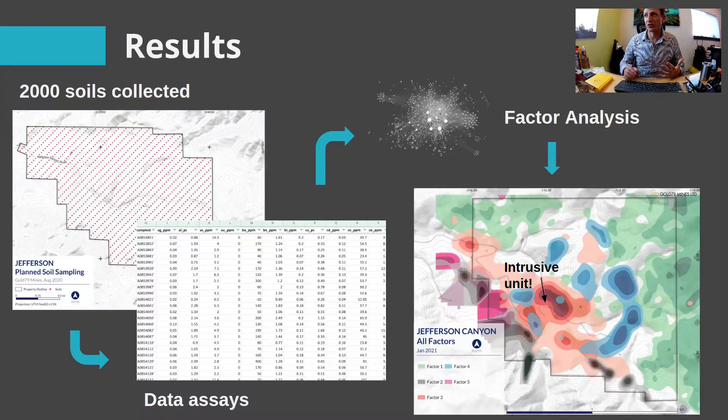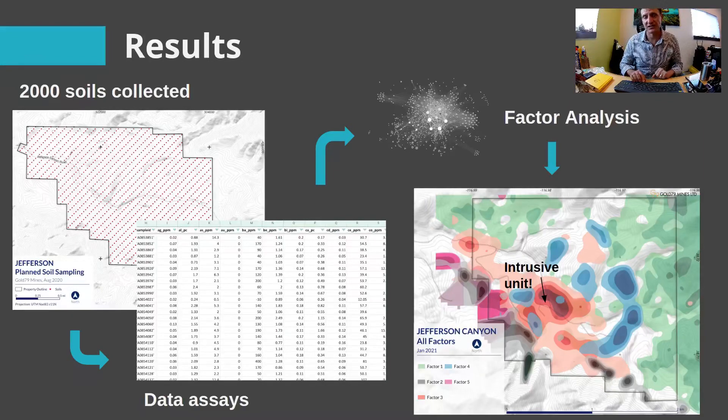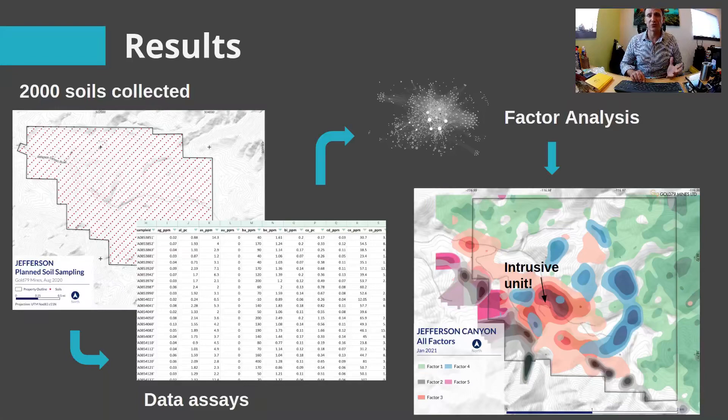Ultimately, what we're able to show the client is this fantastic orange and blue fingerprint that completely highlights their mineral system, even though the amount of outcrop is maybe 3 or 4% coverage. Success.